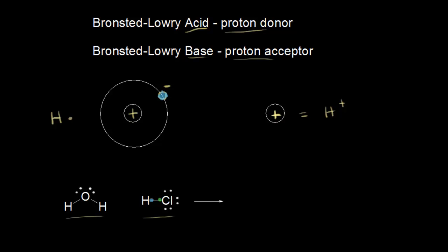In this acid-base reaction, a lone pair of electrons on the oxygen takes the proton—just the nucleus of the hydrogen atom—leaving the blue electron behind on the chlorine. The magenta electrons form a new bond with that proton, giving a new O–H bond. The red electrons on oxygen don't move and remain on oxygen, giving it a +1 formal charge. This produces the hydronium ion, H₃O⁺.